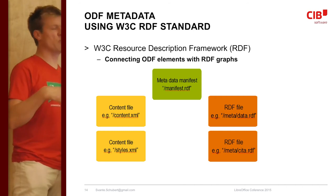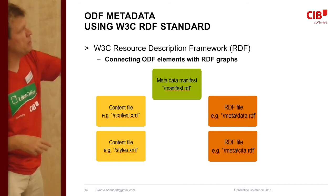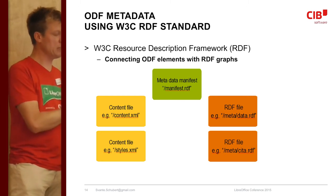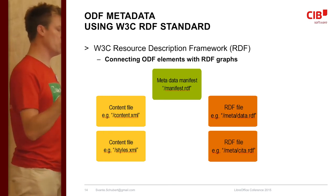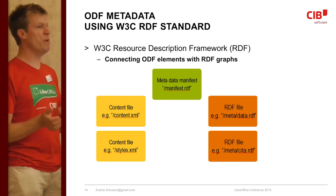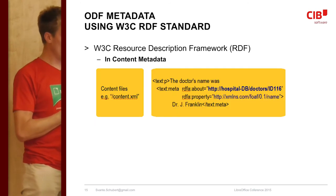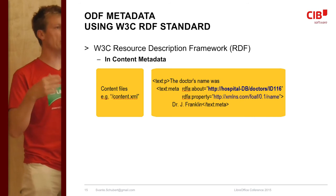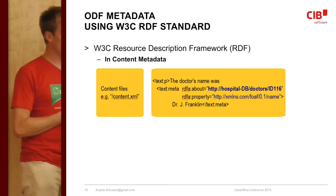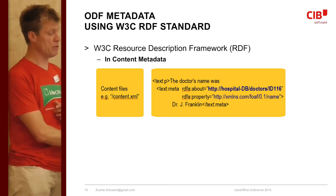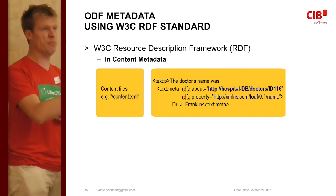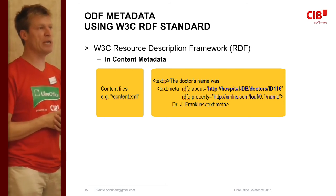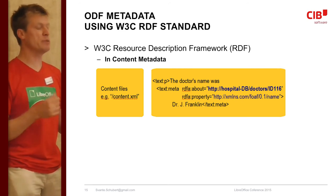ODF now has a mechanism to put RDF files into the ZIP package, and to reference elements within the document via XML IDs using relative URLs. This is managed through the manifest RDF — a single point where you can see where metadata exists in the file. You can also have part of the text document be part of the RDF graph, avoiding data redundancy. The text:meta element works like a span but cannot be split across paragraphs — that's the key constraint.